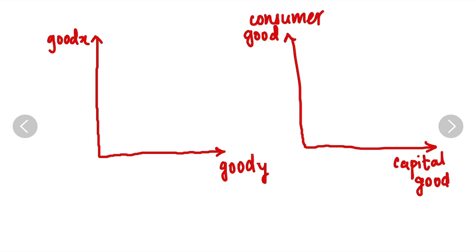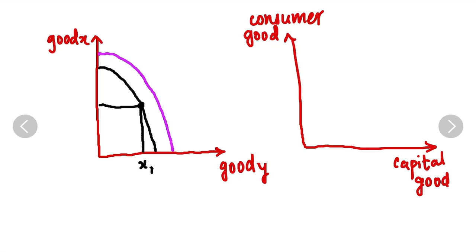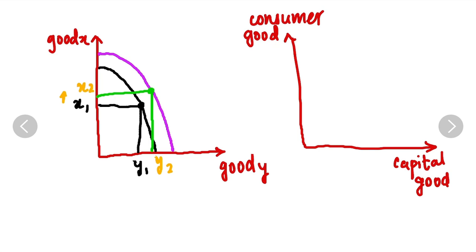For example, if a country has invested in new technology and thus has more resources available with greater efficiency, there will be an outward shift. We draw the new curve further out, with the first point marked as Y1 and X1. Since there is an outward shift, the new curve goes further out, giving us Y2 and X2, which means output is increasing. You also have to show the movement by drawing arrows.